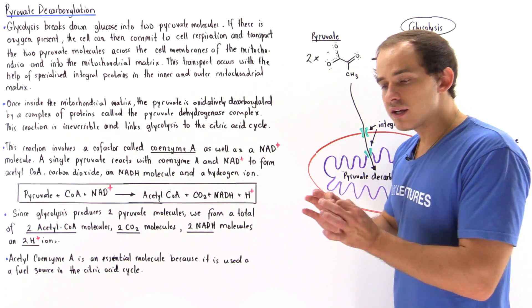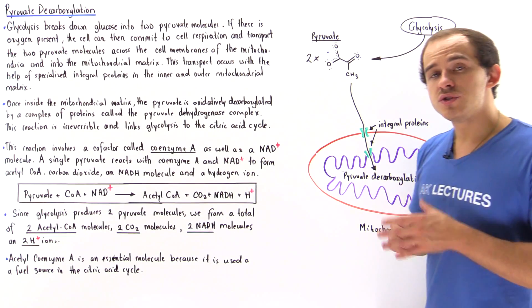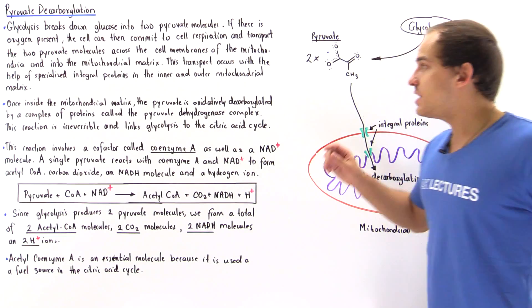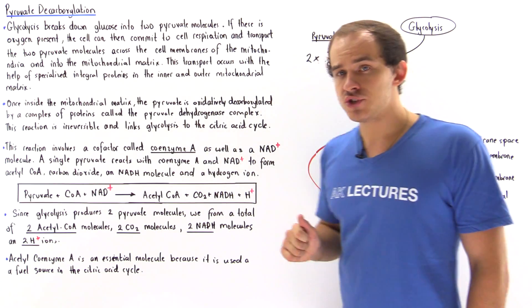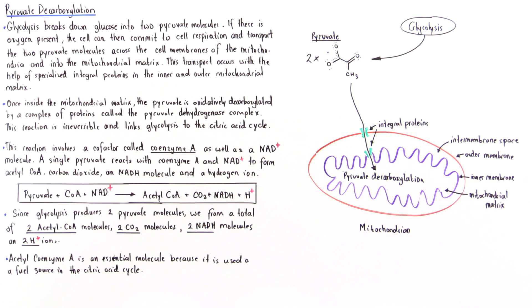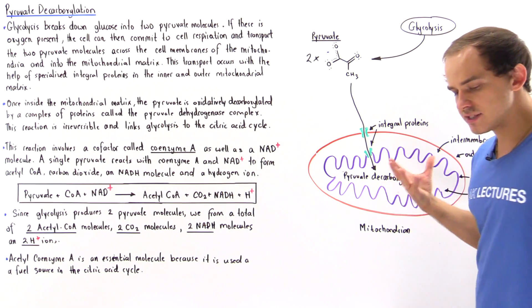If the cell contains oxygen and commits to cellular respiration, these two pyruvate molecules are transported into the mitochondrial matrix of the mitochondrion inside that cell.